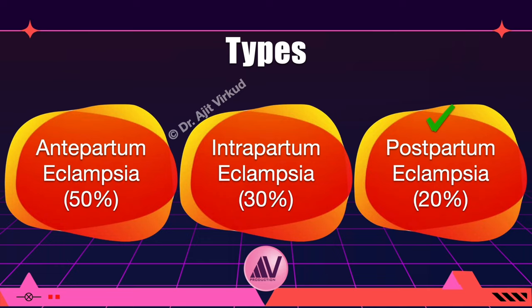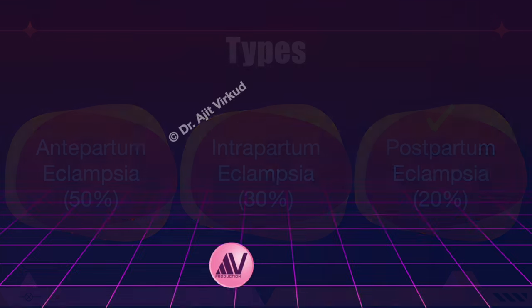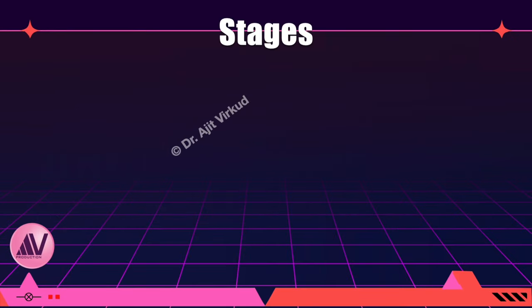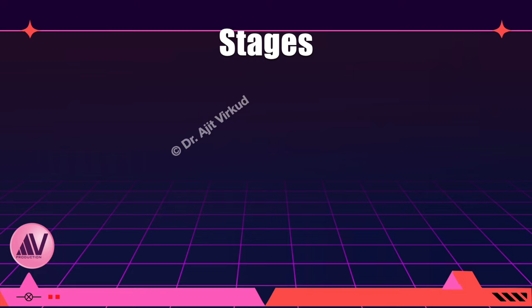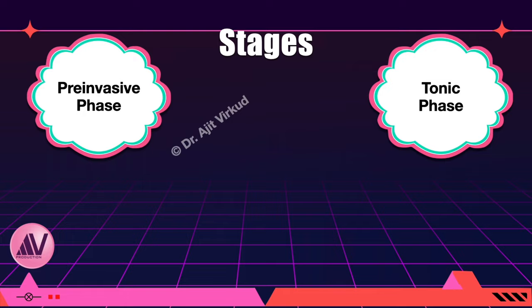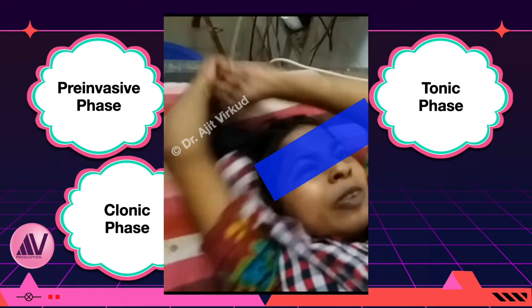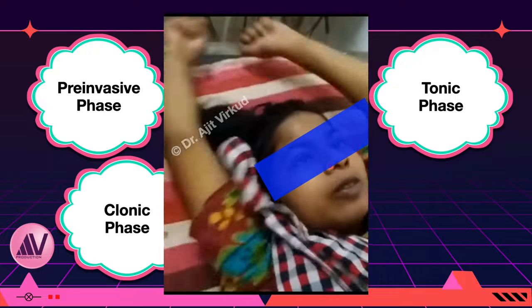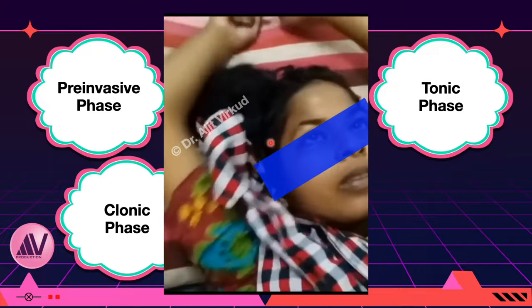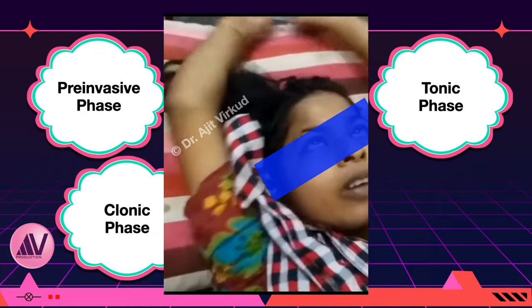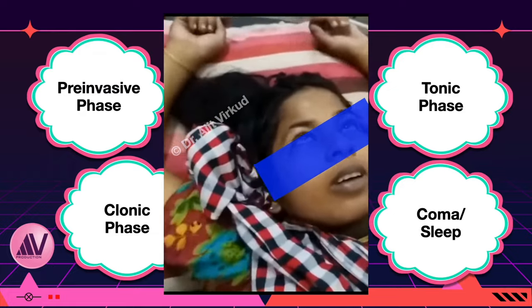One has to worry about the postpartum group the most because they have the highest maternal mortality. A typical eclamptic seizure has the following stages: a pre-invasive phase with some premonitory symptoms, followed by a tonic phase lasting about 20 to 30 seconds, followed by a characteristic clonic phase lasting about half a minute to three minutes, and then the patient goes into deep sleep or coma for hours.